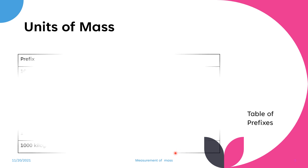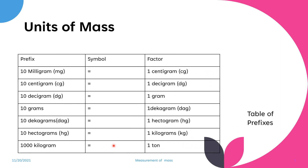Here are the units of mass: 10 milligrams equals 1 centigram, 10 centigrams equals 1 decigram, 10 decigrams equals 1 gram, 10 grams equals 1 decagram, 10 decagrams equals 1 hectogram, 10 hectograms equals 1 kilogram, and 1,000 kilograms equals 1 ton.